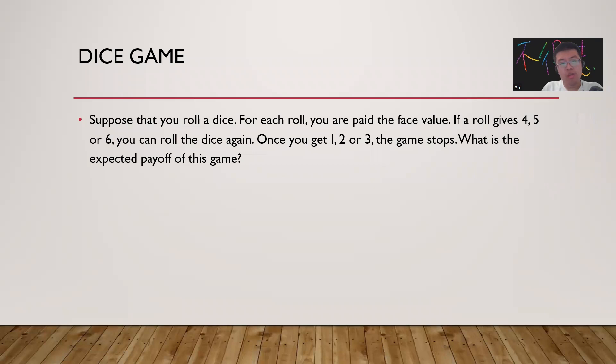Suppose you roll a dice. For each roll, you are paid the face value. For example, if you throw one, you get one; throw two, you get two; throw three, you get three. If the throw gives you four, five, or six, you can roll the dice again. Once you get one, two, or three, the game stops. What's the expected payoff of this game?